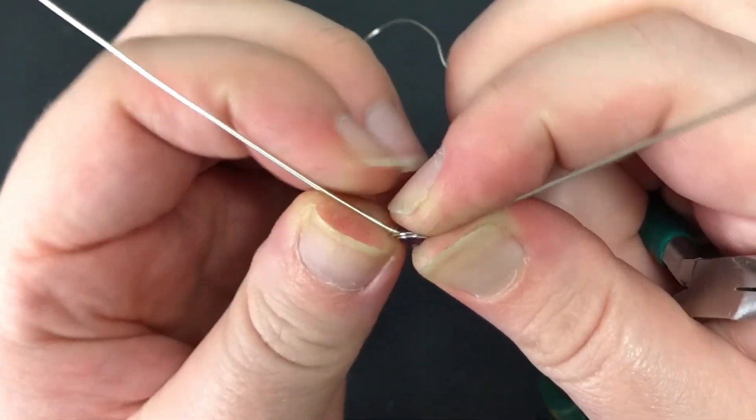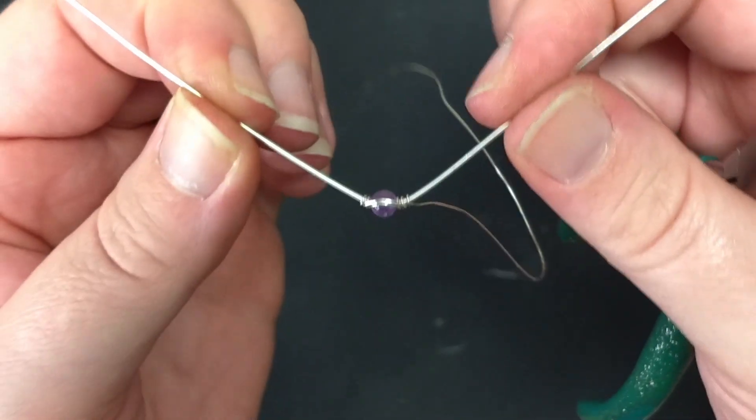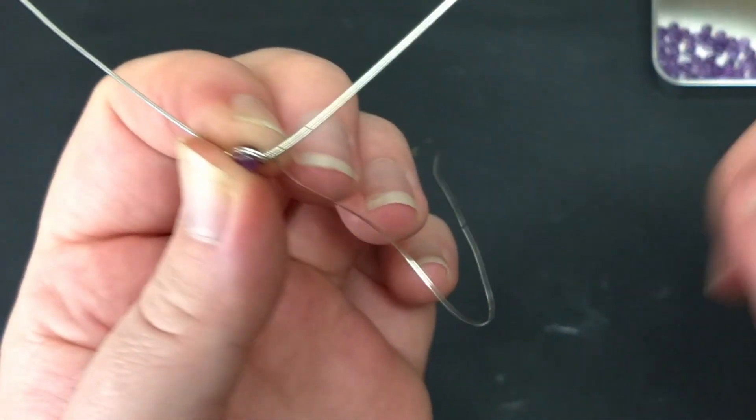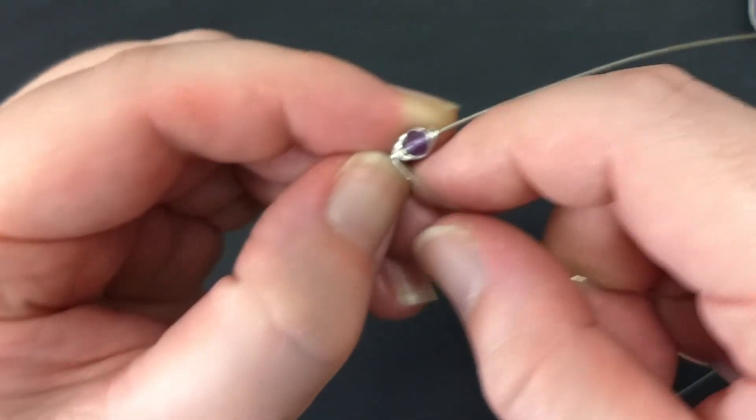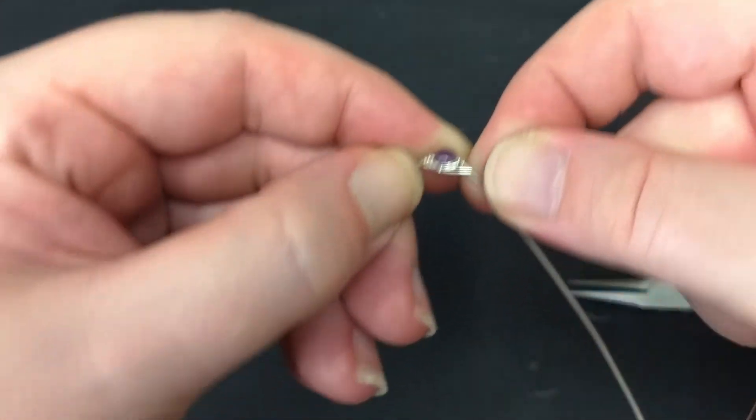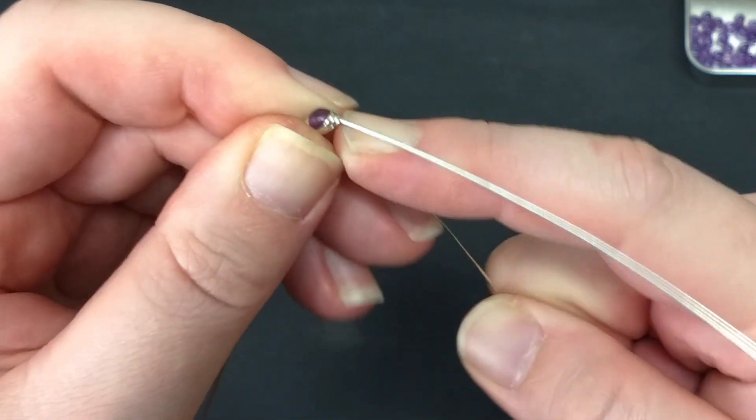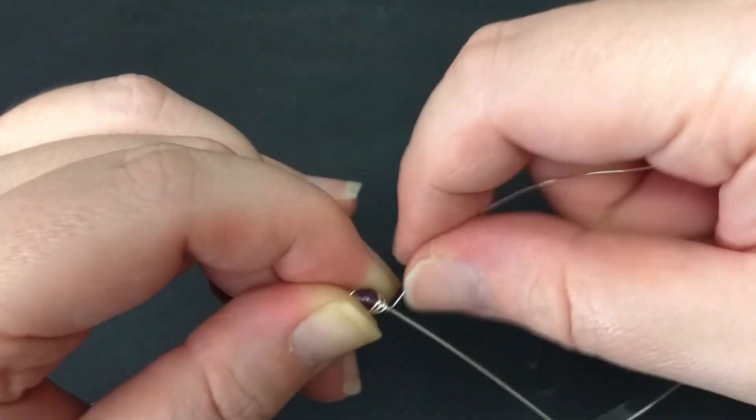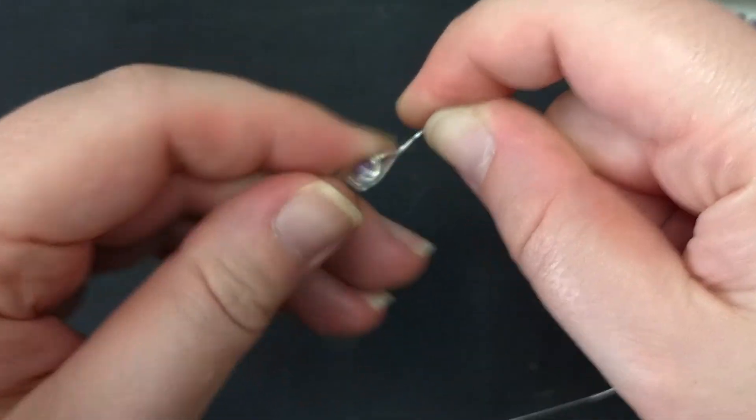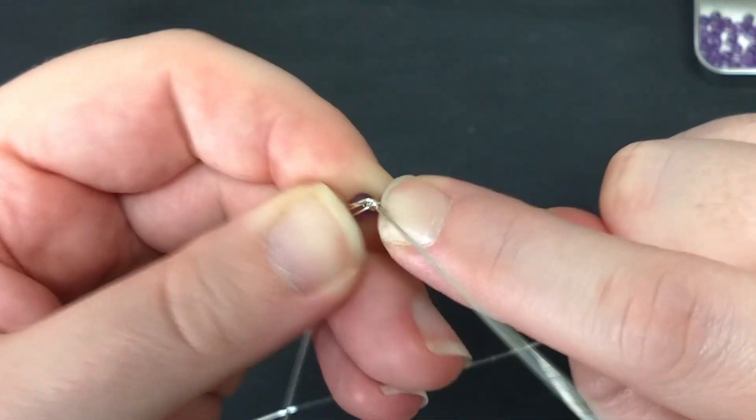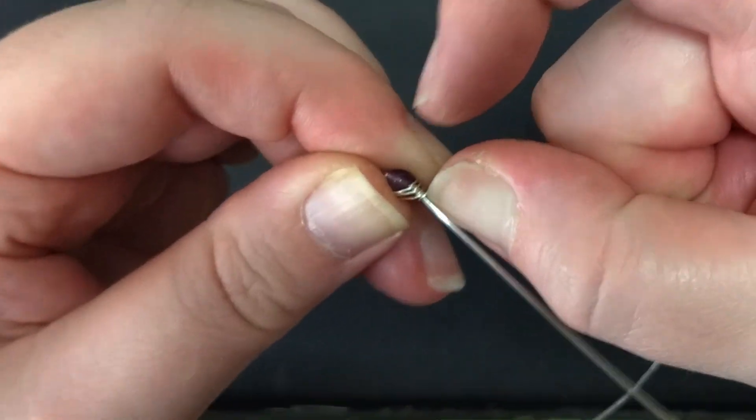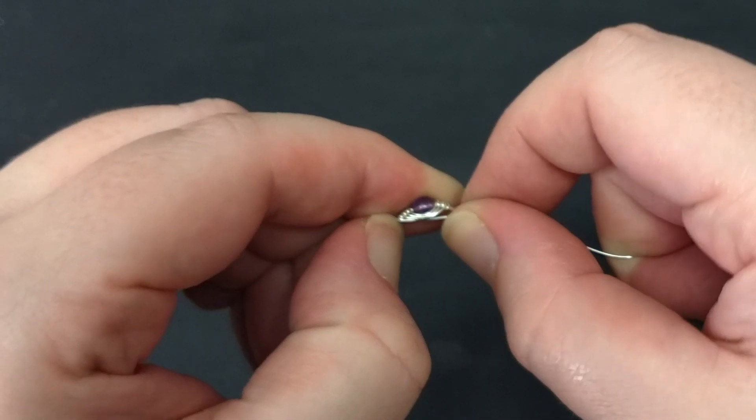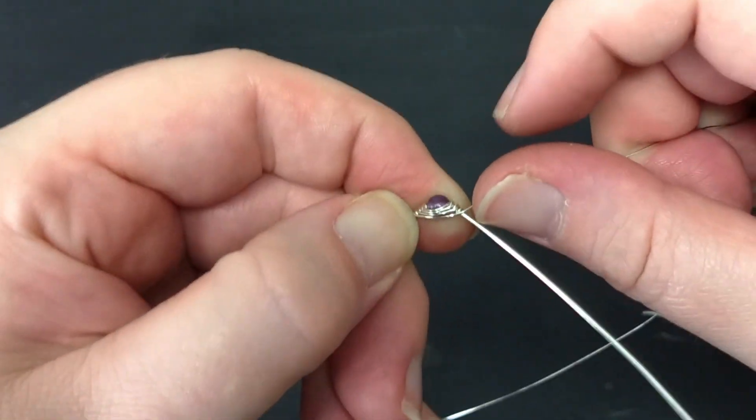Put a bend in the middle of the wire where the bead sits. Continue wrapping the bead another two times. Make sure the wraps are tight and secure.